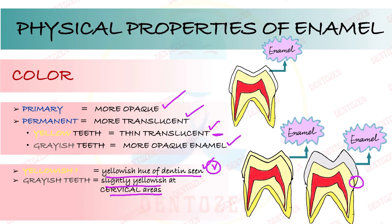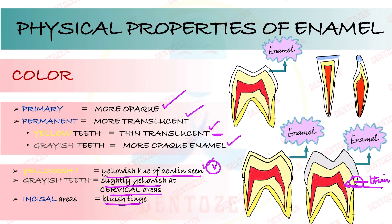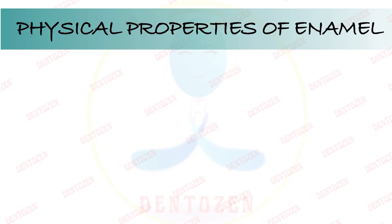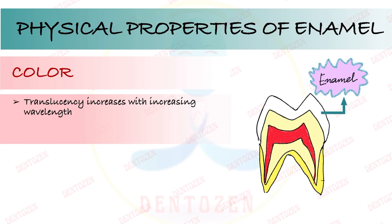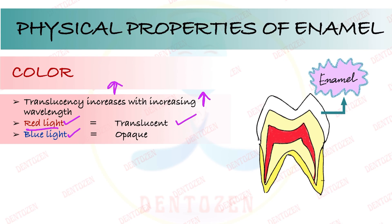Teeth that are grayish can show a slightly yellowish appearance at the cervical regions because enamel is thinner there, allowing light to strike the underlying dentine and reflect back. Incisal areas give a bluish tinge because in that thin edge only a double layer of enamel is present with no dentine. Regarding wavelength: with an increase in wavelength, translucency increases. So red light gives a more translucent appearance, while blue light with lower wavelength gives a more opaque appearance to enamel.